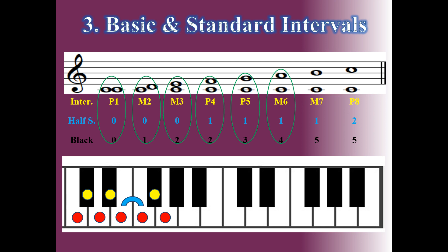DO to LA: DO, RE, MI, FA, SOL, LA — six white keys and four black keys, and one half step. So the major sixth has six white keys, four black keys, and one half step.